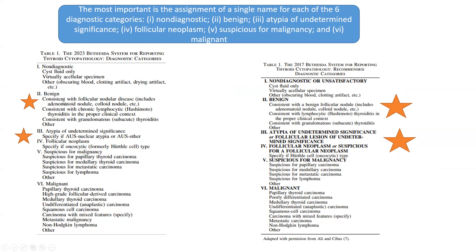Category two is benign. Here they have labeled it as follicular nodular disease, which includes adenomatoid nodule, colloid nodule, etc. Before, this was referred to as benign follicular nodule. Now they have specified it in more detail as follicular nodular disease. Other things remain the same: chronic lymphocytic thyroiditis, which is Hashimoto's thyroiditis in proper clinical context, granulomatous subacute thyroiditis, and Riedel's thyroiditis — all are classed into the benign category.